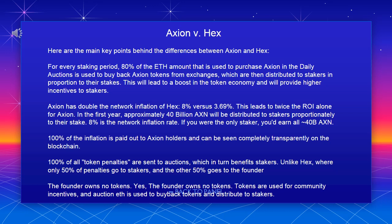Unlike HEX, where only 50% of penalties go to stakers and the other 50% goes to the founder — the Axion founder owns no tokens. Yes, the founder owns no tokens. Tokens are used for community incentives, and auction fees are used to buy back tokens and distribute to stakers.